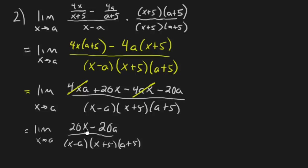Okay, so what can we do with 20x minus 20a? I can factor out 20. So we get 20, x minus a. That's great, because there is my x minus a that's going to cancel with that x minus a. So let's keep going. x minus a, x plus 5, a plus 5. So let's go ahead now and get rid of the x minus a's.